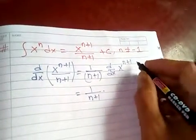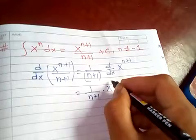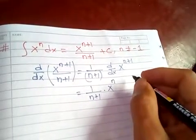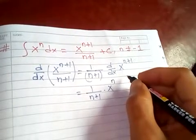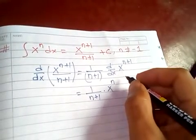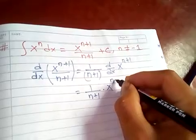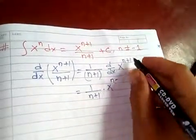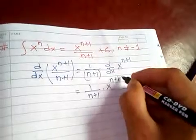This means one over n plus one times the differentiation of x to the n plus one. As we know, the derivative of x to the n is n times x to the n minus one.